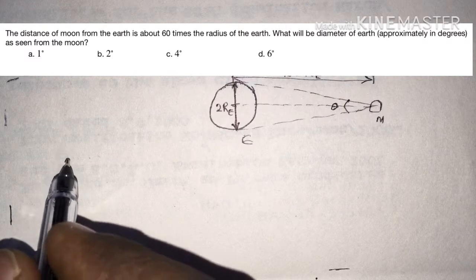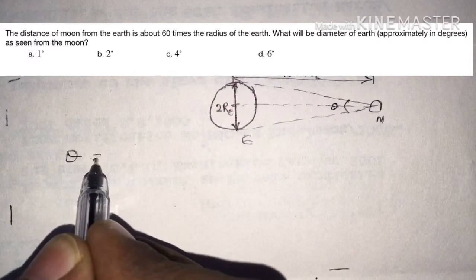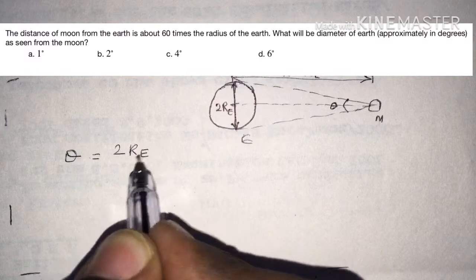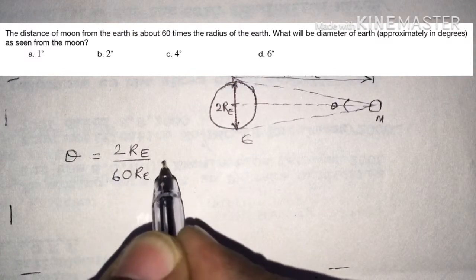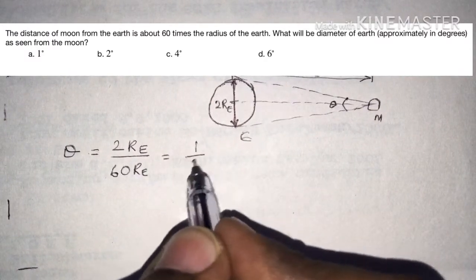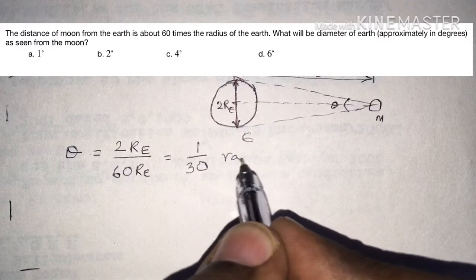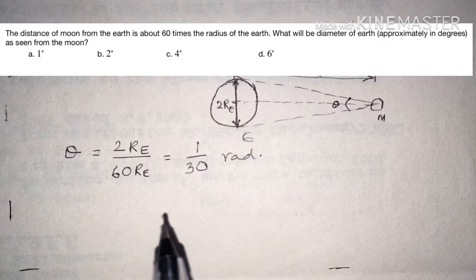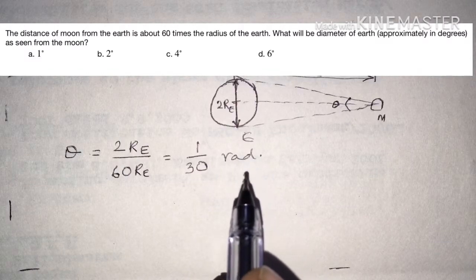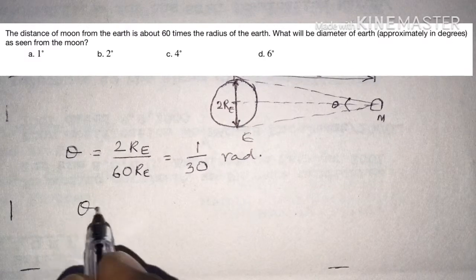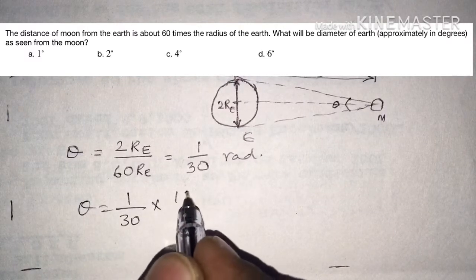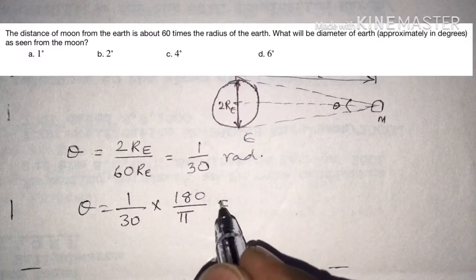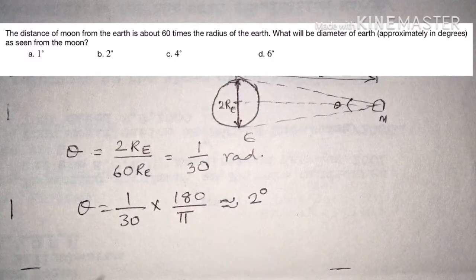Using the method of parallax, angle theta equals the opposite side 2 R_e divided by 60 R_e, which gives 1/30 radians. Since the options are in degrees, we convert: theta equals 1/30 times 180 divided by pi, which gives approximately 2 degrees. The answer is option B.